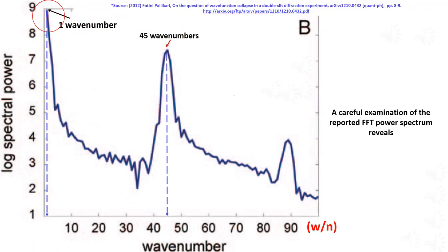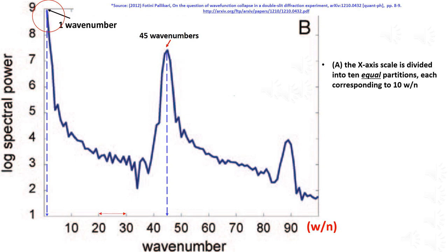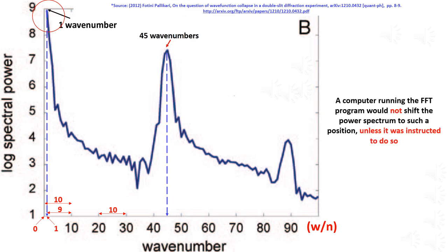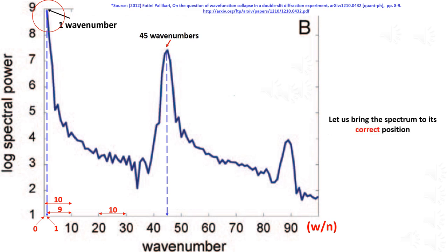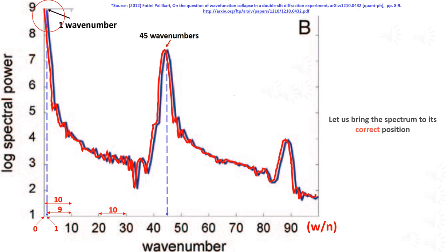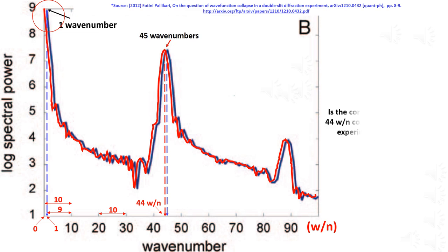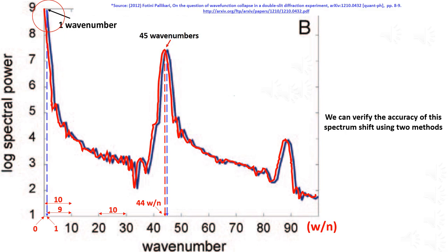A careful examination of the reported power spectrum reveals: A) the x-axis scale is divided into 10 equal partitions, each corresponding to 10 wavenumbers; B) the beginning of the spectrum falls at one wavenumber instead of the expected zero frequency. A computer running the Fourier analysis would not shift the power spectrum to such a position unless instructed to do so. Bringing the spectrum to its correct position, the peak frequency is now at 44 wavenumbers. We can verify the accuracy of this spectrum shift using two methods.